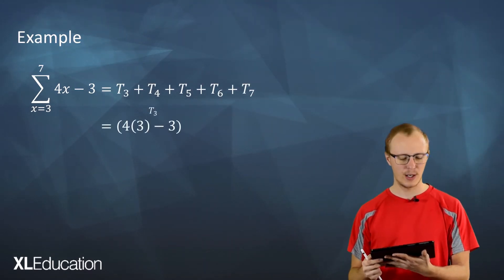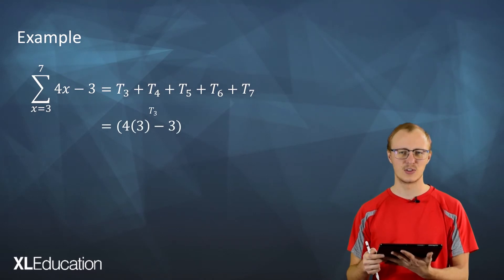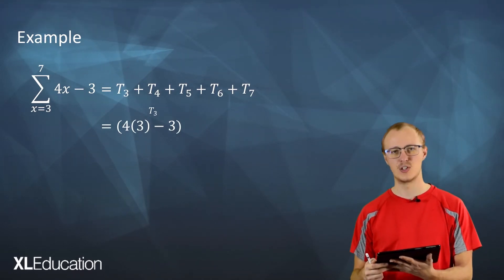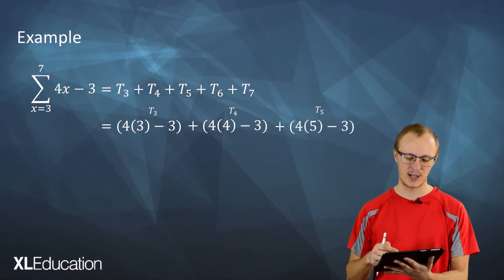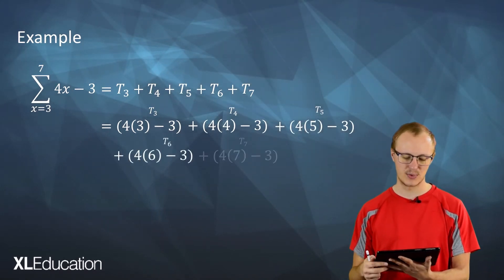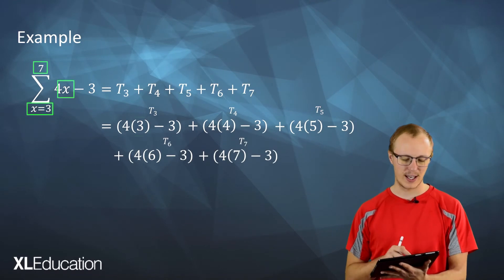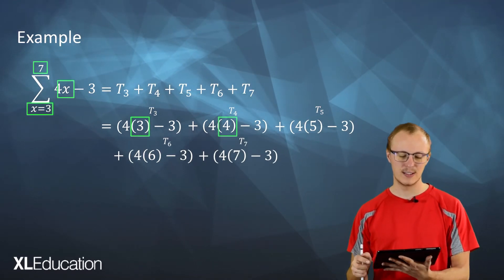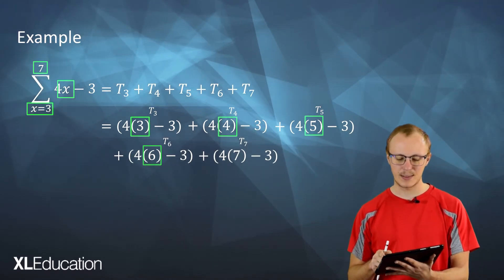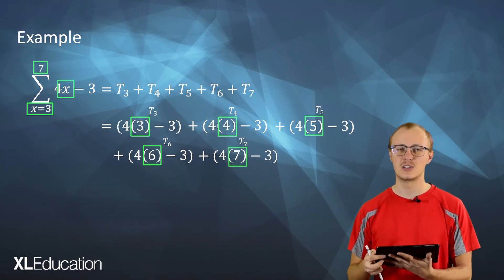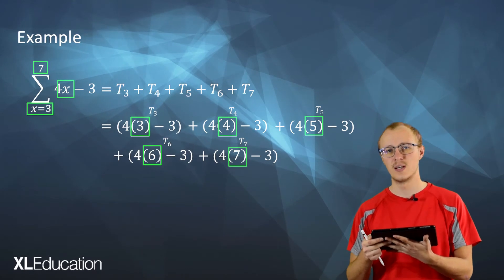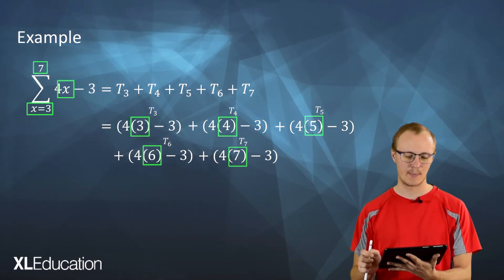How do we get term 3? We substitute 3 into 4x minus 3. Term 4 we substitute in 4, term 5 we substitute in 5, term 6 we substitute in 6 and term 7 we substitute in 7. Now again note we start at term 3 and we substitute each sequential integer in until we get to term 7 and then we just add them all up.